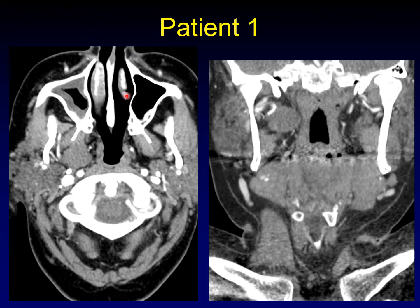Here's patient one. This is the mass in question, and you can see it here on a coronal reformat. As promised, it is pre-styloid.